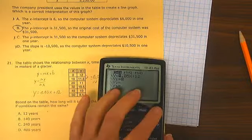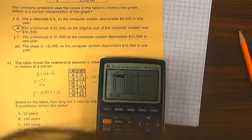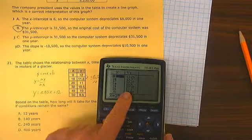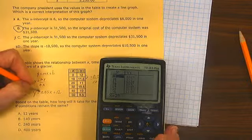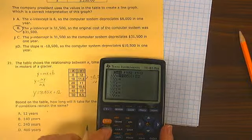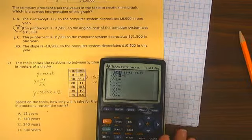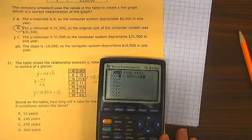Now, when we look at the table of data, uh-oh, spaghettios, my glacier is getting thinner. That's because my slope is not positive, my slope is negative. Let's try this again. Y is equal to negative 0.05 times x plus 12.